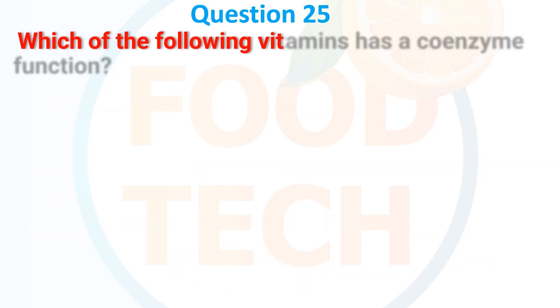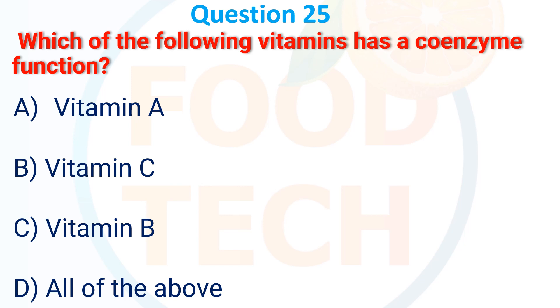Question 25. Which of the following vitamins has coenzyme function? A. Vitamin A. B. Vitamin C. C. Vitamin B. D. All of the above. The correct answer is D: all of the above.